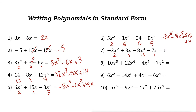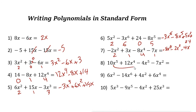Next one: the degrees are 2, 1, 4, and 1. Writing in standard form, start from degree 4: negative 8x to the 4th. Then degree 2: minus 2x squared. Then degrees 1 and 1 — combining 3x minus 7x gives minus 4x.